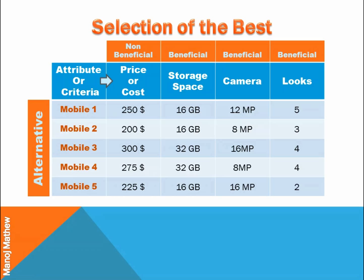We have to categorize the criteria into non-beneficial and beneficial criteria. Non-beneficial criteria are those whose lower value is desired — for example, cost; we desire a product with the lowest cost. Beneficial criteria are those whose higher value is desired — for example, storage space, camera, and looks. We desire more storage space and better camera quality with higher megapixels.